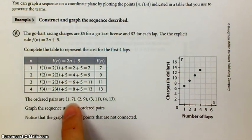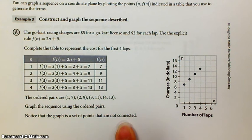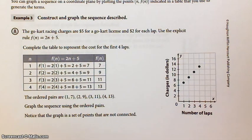And then we generate ordered pairs, graph the ordered pairs, and notice that the graph is a set of points that's not connected. In this real world situation, they're not going to charge you for like a part of a lap. They're going to charge you either one lap, two laps, three laps, four laps, etc. Okay, so you plot those points for a sequence and do not connect them.